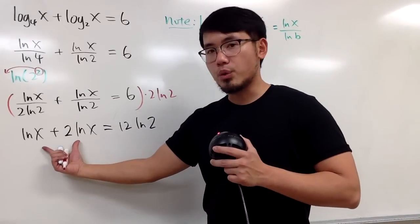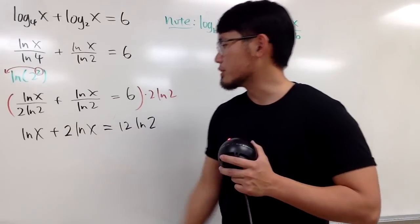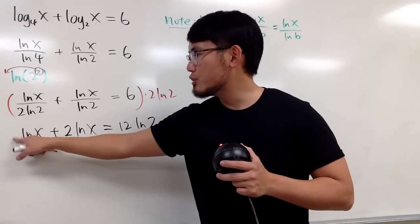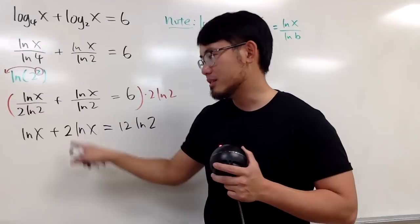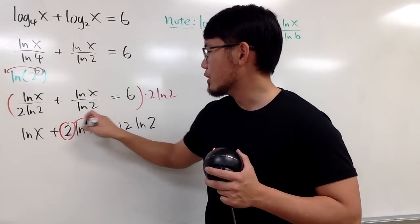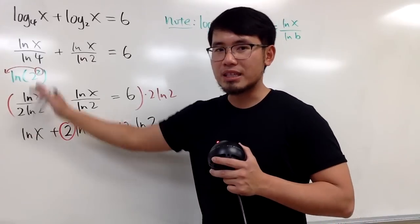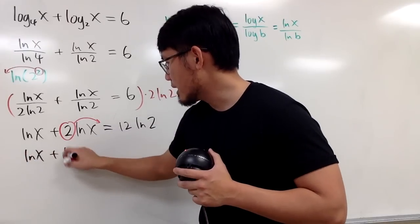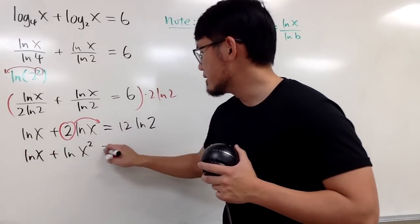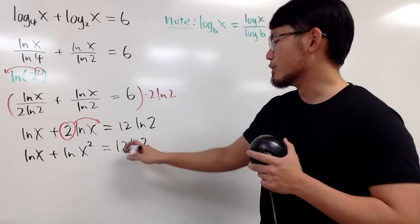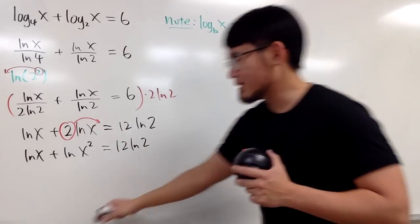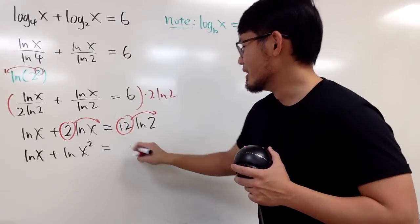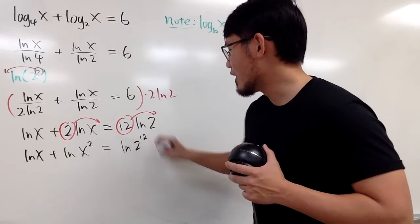And now, for this equation, for this part right here of the equation, I want to combine the logarithms, and to do so, you have to make sure the coefficients are 1. This is not 1, but it's okay, because we can bring this and make it into a power. So, it's like the backwards of that. So, when we do that, this is natural log of x plus natural log of x squared, and this is 12 natural log of 2. Of course, you can bring the 12 up. You guys will see, this is actually going to be pretty cool. Natural log of 2 to the 12th power.